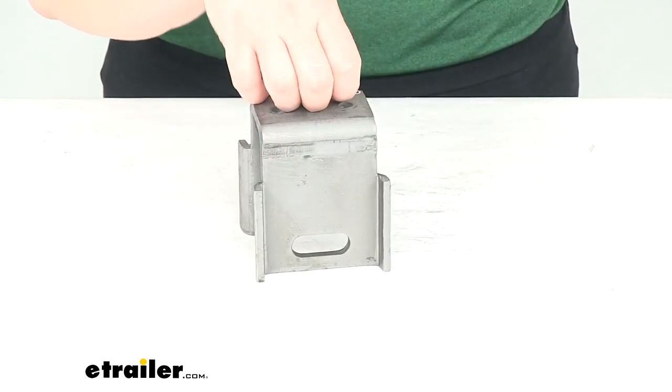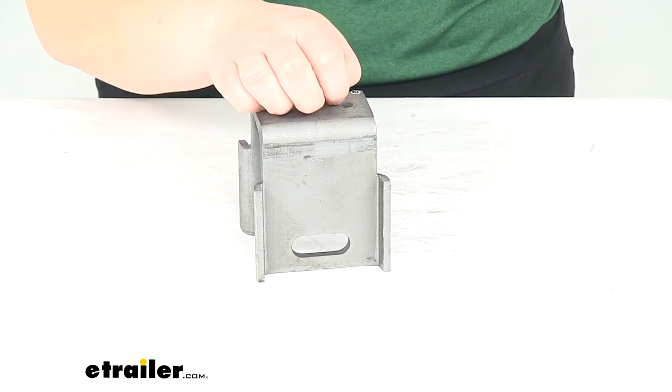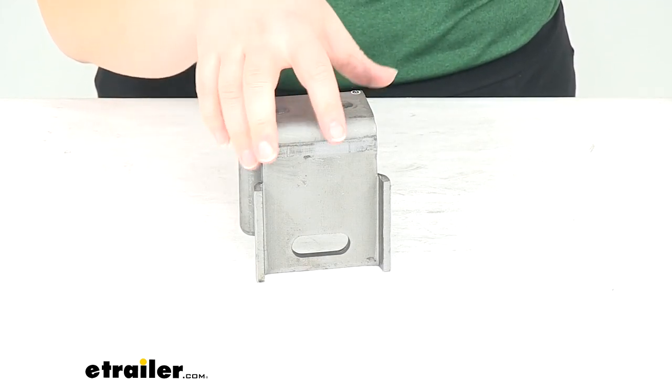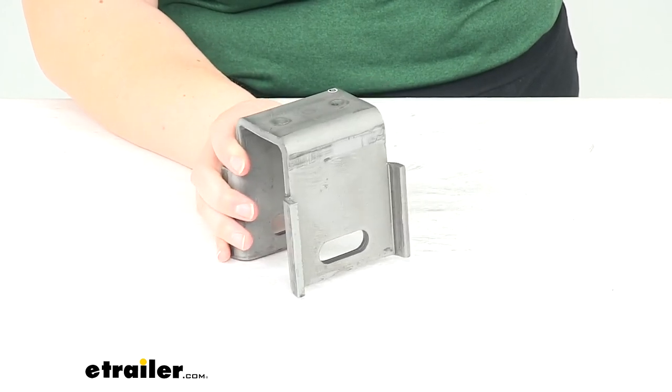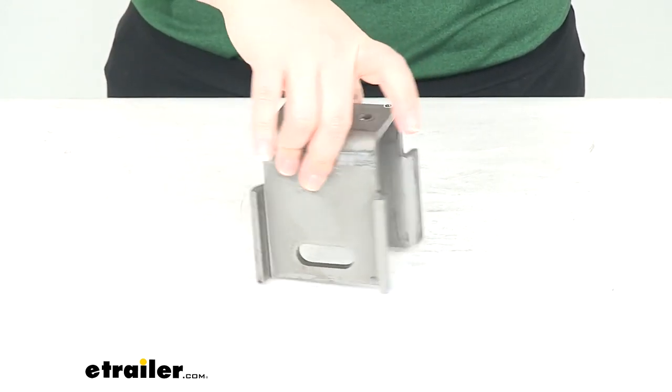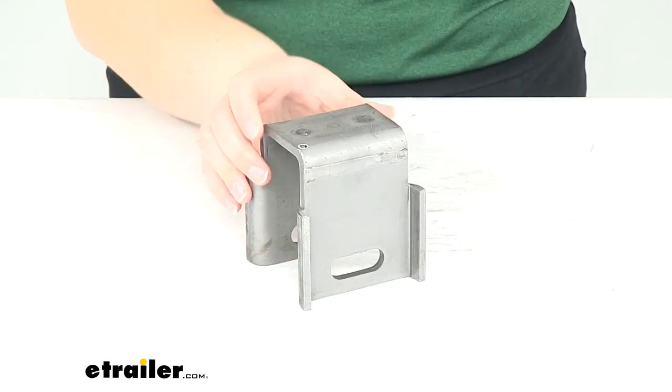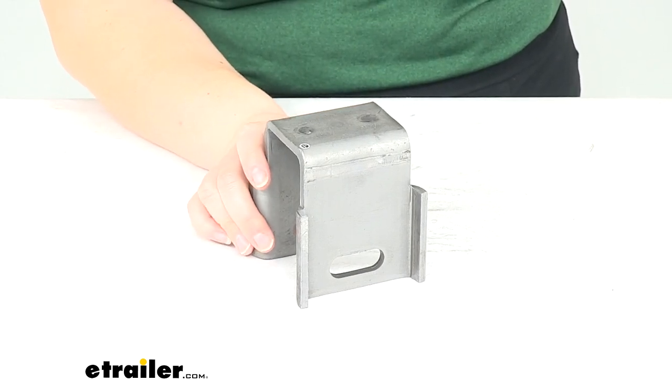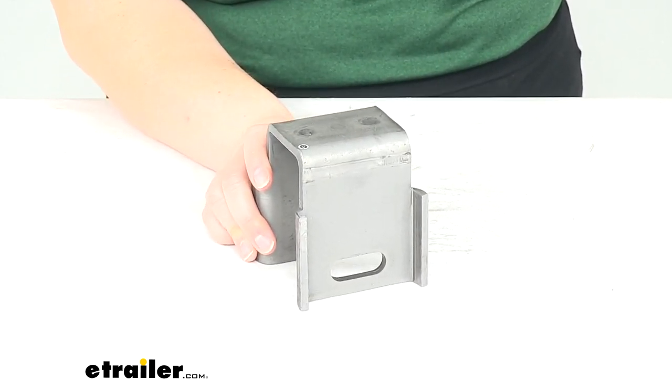We do have other components for the Correct Track Axle or the Correct Track System. You can find that right here at eTrailer.com. But that's pretty much all there is to it for our replacement Lippert Components Correct Track Axle Hanger. Thanks for watching and we'll see you next time.